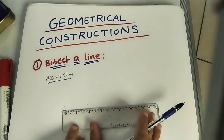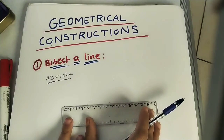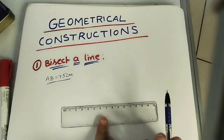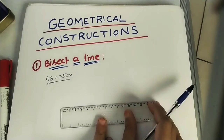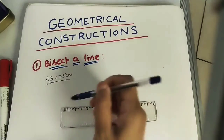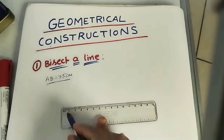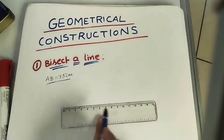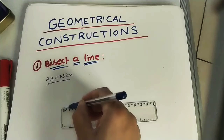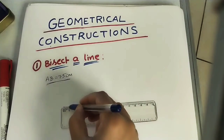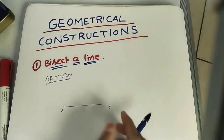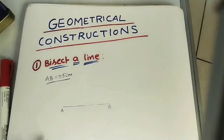Draw the AB line. In the exam or drawing hall you should use a pencil, but here for visibility I am using a pen. Mark the end points: the initial point is at zero and the endpoint at 7.5 is the B point. After marking the end points, join them and label them capital A and capital B. This is our AB line.